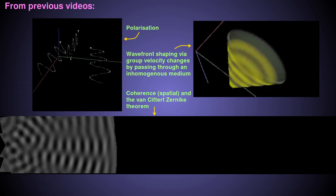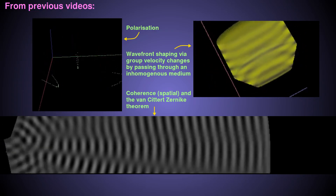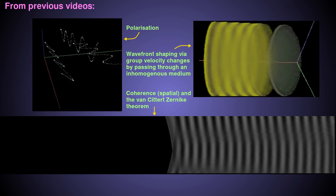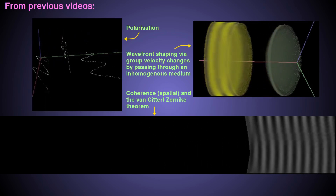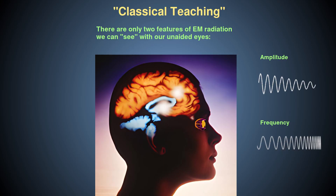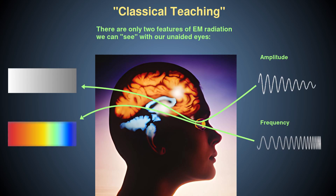In previous videos, I discussed the various physical characteristics of EM radiation. You may have been taught that we can only see the intensity of EM radiation as brightness, and to some extent its frequency as colours.